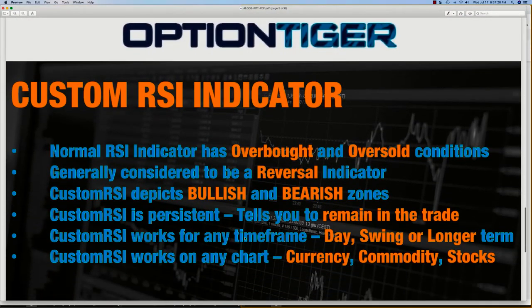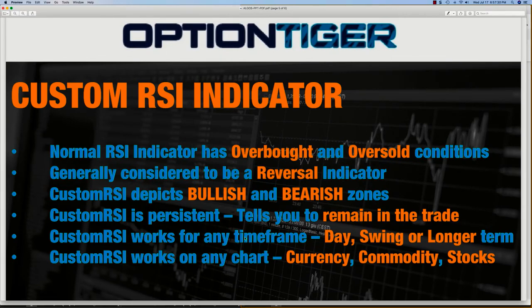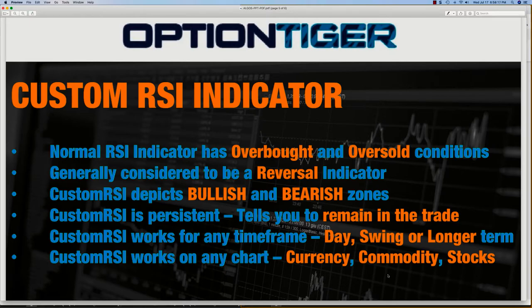What we'll also look at is something called a Custom RSI. If you've heard of the RSI indicator, it generally tells you when a stock is overbought or oversold — a reversal signal. But this Custom RSI has been customized to depict bullish and bearish zones, so it becomes persistent. Once it gets into the bullish zone, it could remain there, telling you to stay in the trade. It works for any timeframe — day, swing, or longer term — and works on any chart: currency, commodity, stocks. It's a very helpful indicator.